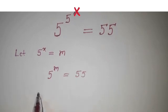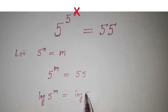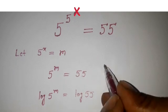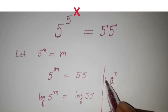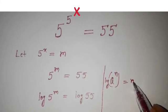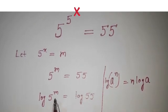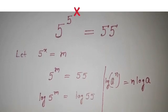Now I'm taking log on both sides, so log 5 to the power m equals log 55. This m will come in front of log 5, because we know that for a to the power n, taking log brings n in front. So we have m times log 5 equals log 55, and therefore m equals log 55 divided by log 5.